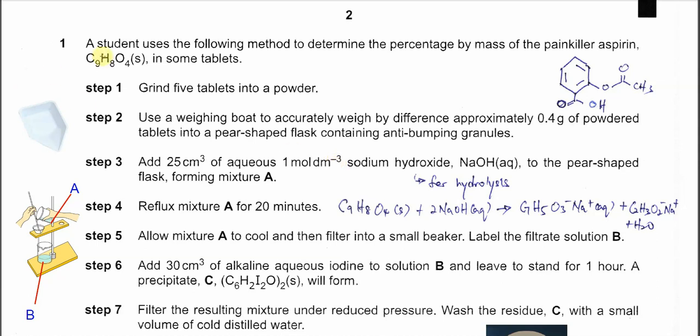Question 1. A student uses the following method to determine the percentage by mass of the painkiller aspirin, C9H8O4, in some tablets. Step 1, grind 5 tablets into a powder. Step 2, use a weighing boat to accurately weigh by difference approximately 0.4 grams of powdered tablets into a pear-shaped flask containing anti-bumping granules.